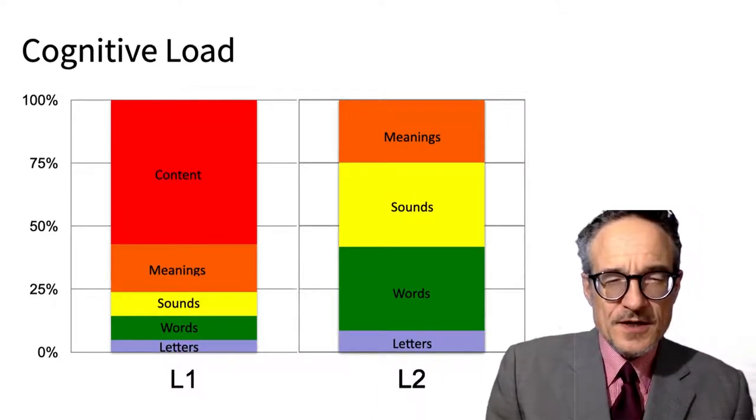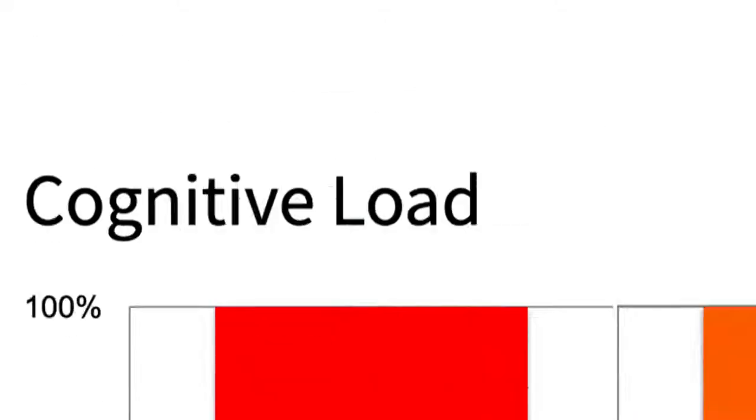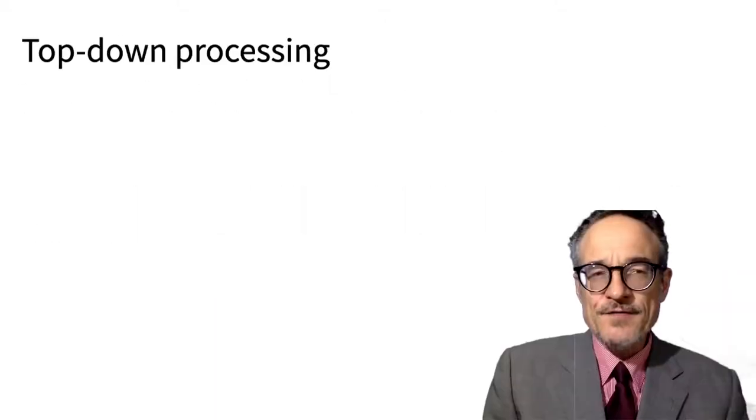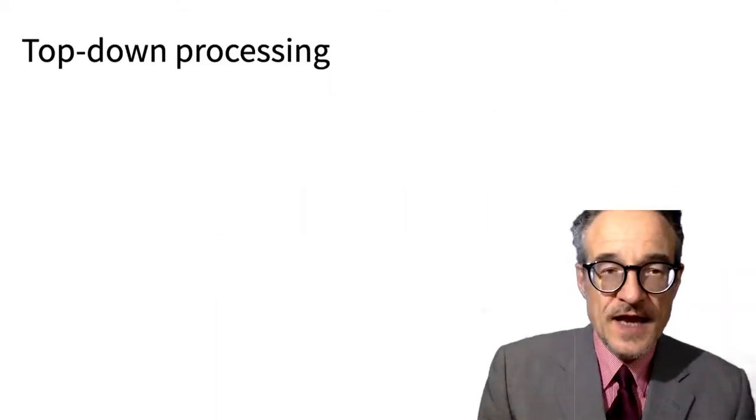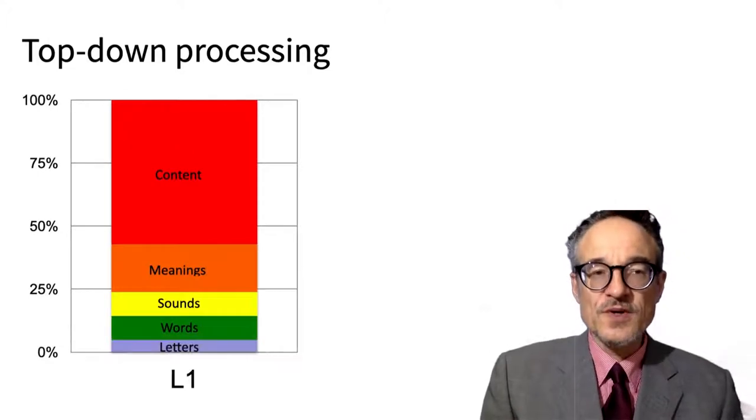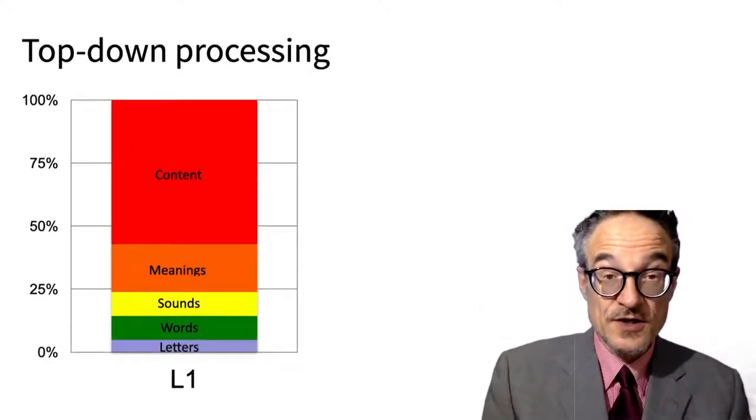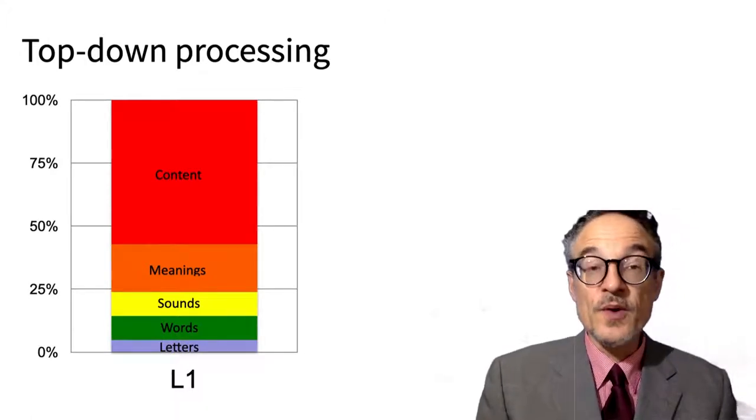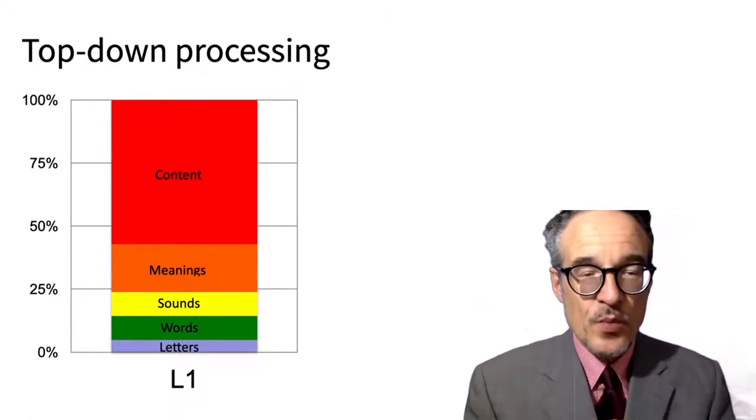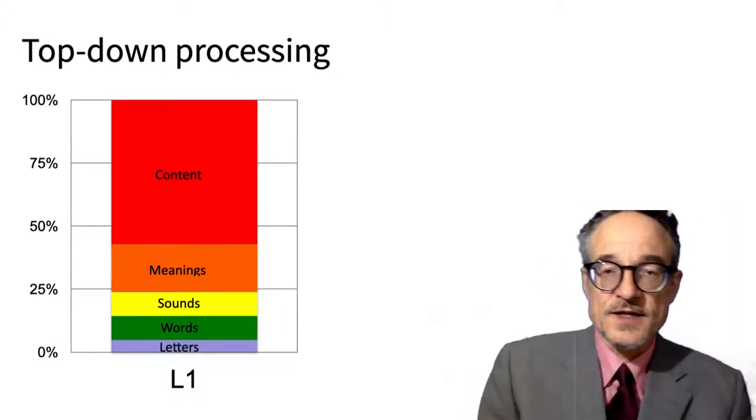Another way to think is what's called top-down processing. And in fact, often if we're reading in the first language, we're not starting with letters. We're starting with ideas, and we're starting knowing what's happening, knowing something about the content that we're reading. And we work down from that towards the letters.